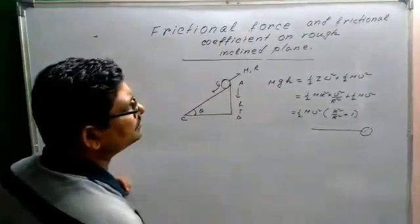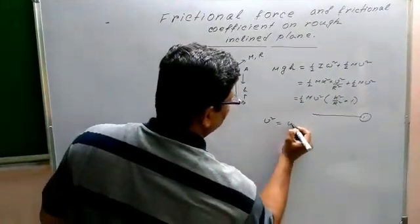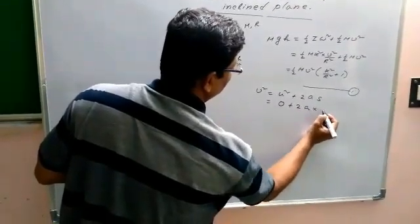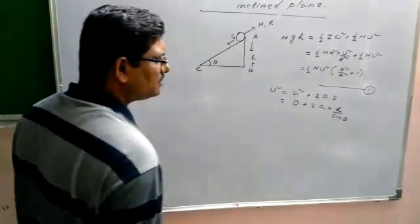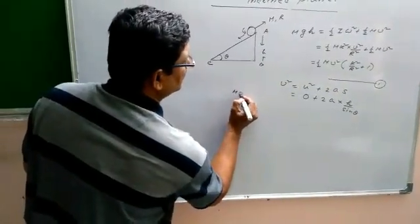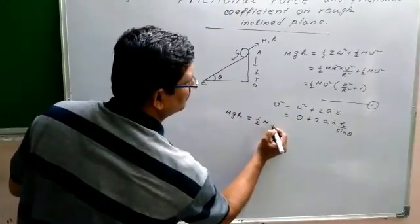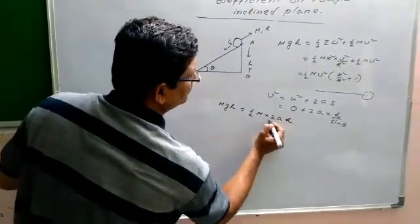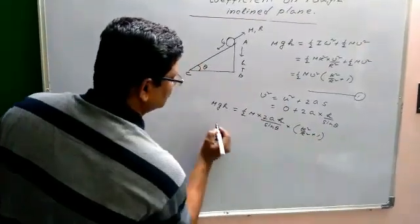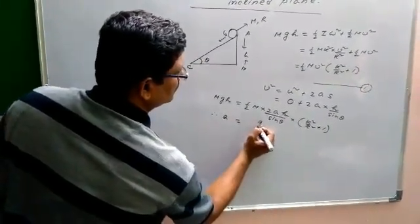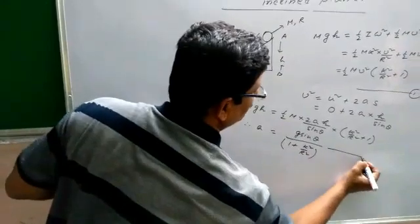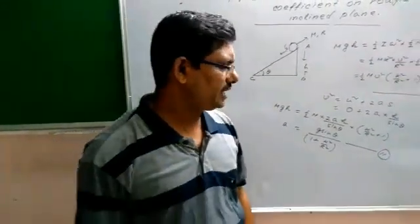Now, v squared equals u squared plus 2as. The initial velocity is zero. We also know that s equals h by sine theta. Putting this value into equation one, we get: mgH equals half mk squared multiplied by 2aH by sine theta, times 1 plus k squared by r squared. This is equation number two, from which we can calculate the acceleration of the body.